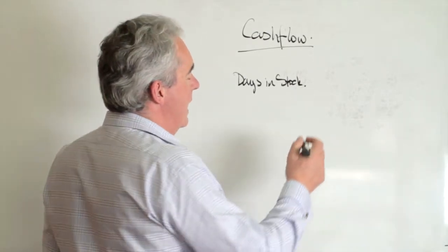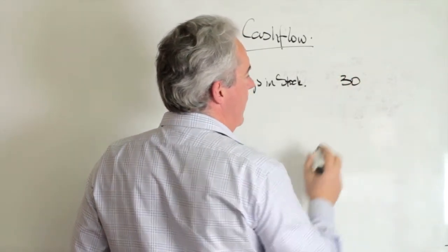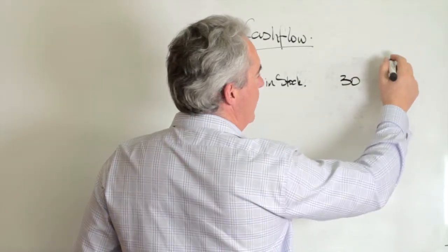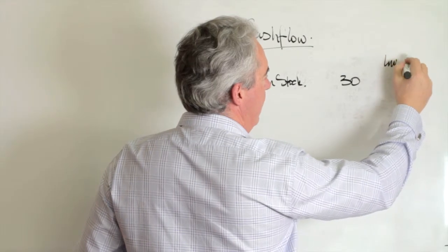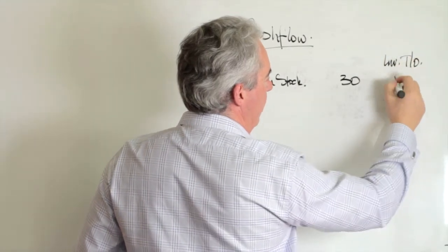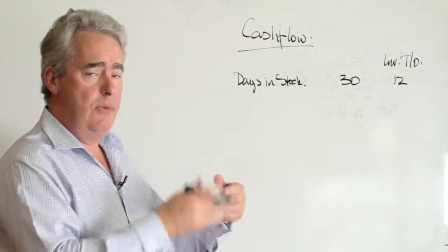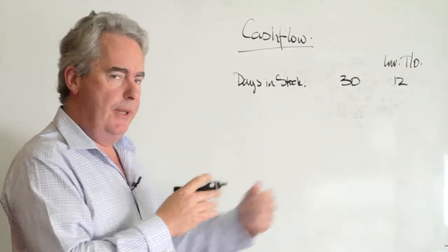If we've got 30 days of stock in hand, we can also look at it as inventory turnover. So we're turning over our inventory 12 times. That's fantastic. We're getting the money in, we're making our margin, we move on to the next month.